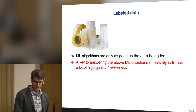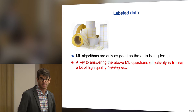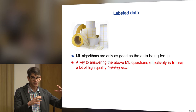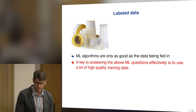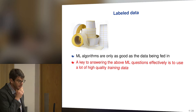A key to answering machine learning questions is having a lot of high-quality training data. That's been one of the reasons for the immense breakthroughs in recent years — clever ways to produce lots and lots of training data. The training data are very often obtained by humans, using some type of crowdsourcing technology. Humans are very good at the tasks I've listed, so if we can mimic humans and get a lot of data from humans labeling things, then we can potentially do really well in machine learning.